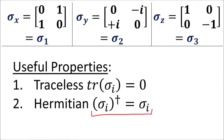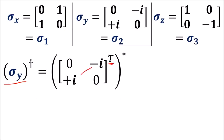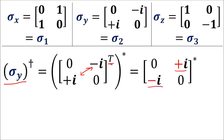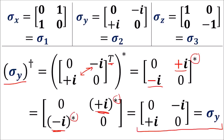All three sigma matrices are Hermitian, which means they are equal to their own Hermitian conjugates. Both sigma x and sigma z are real matrices, so we can just take the transpose to see this and ignore the complex conjugate. For sigma y, we first flip the rows and columns, which exchanges plus i and minus i. Then the complex conjugate flips the plus and minus signs, so we end up back where we started.